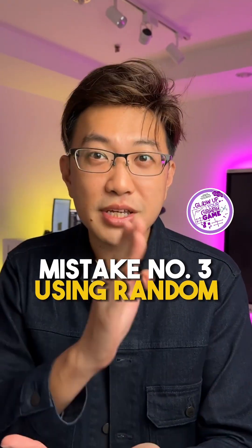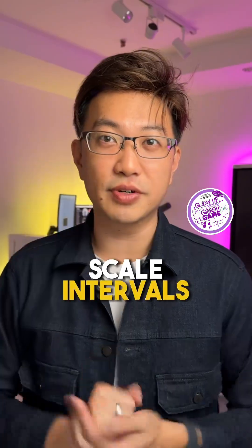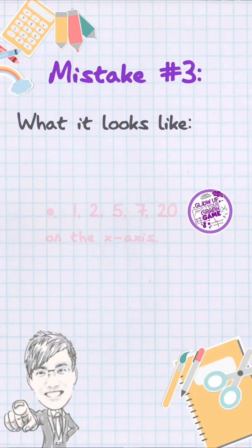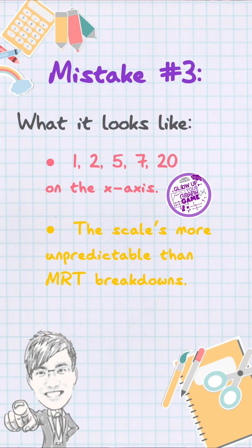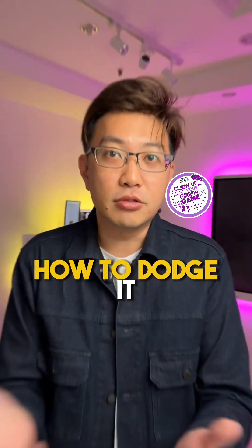Mistake number 3: using random scale intervals. What it looks like — 1, 2, 5, 7, 20 on the x-axis. The scale is more unpredictable than MRT breakdowns.